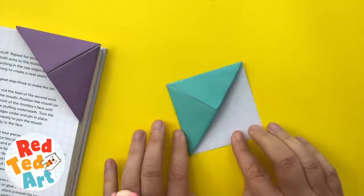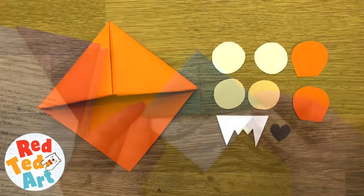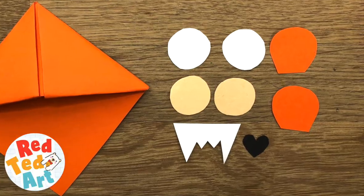There we go. Your basic corner bookmark is finished. Now you need to embellish your tiger with some simple shapes.